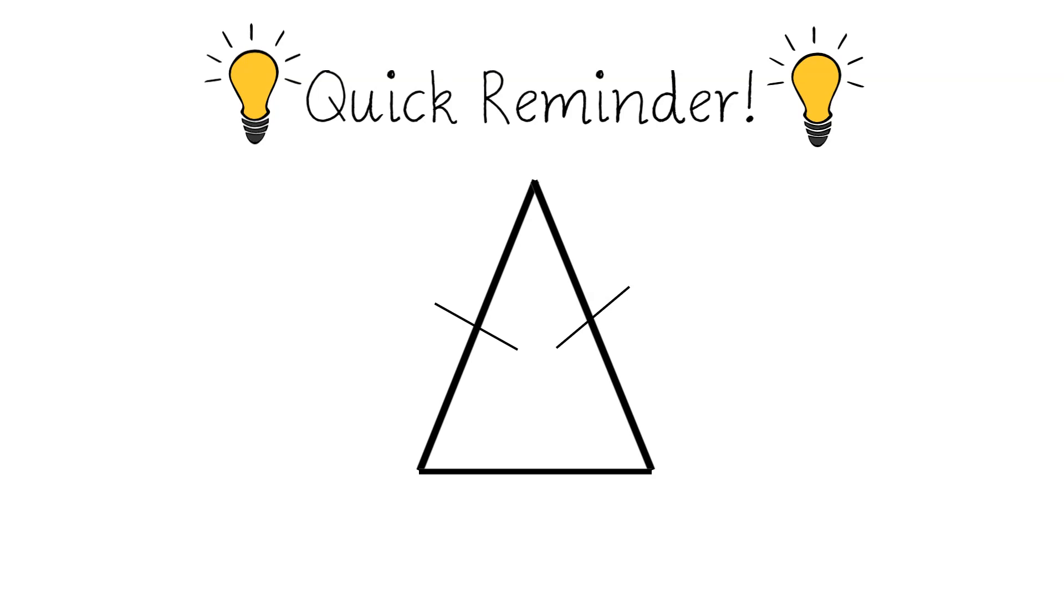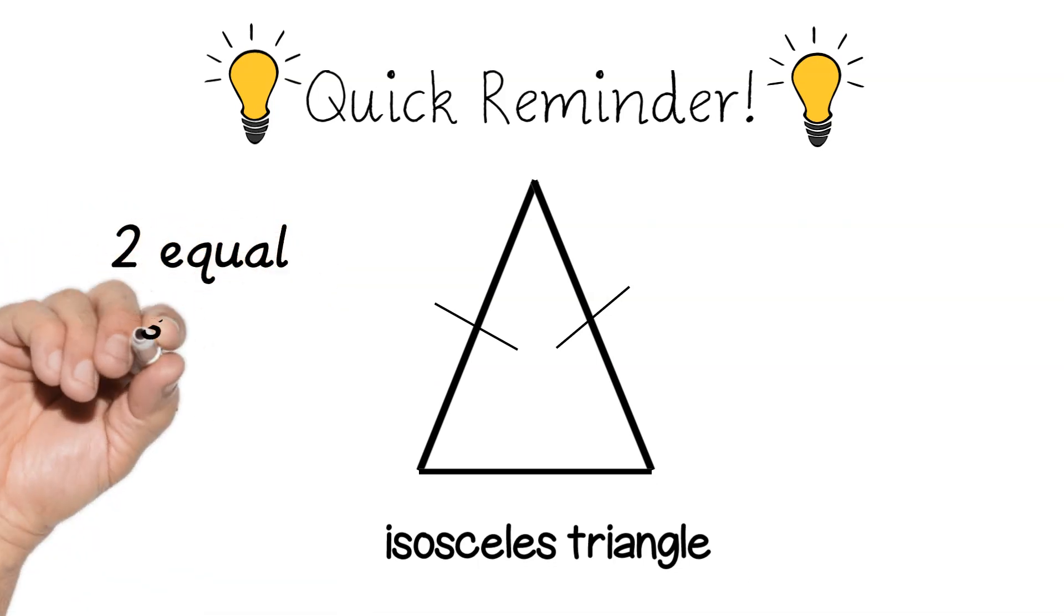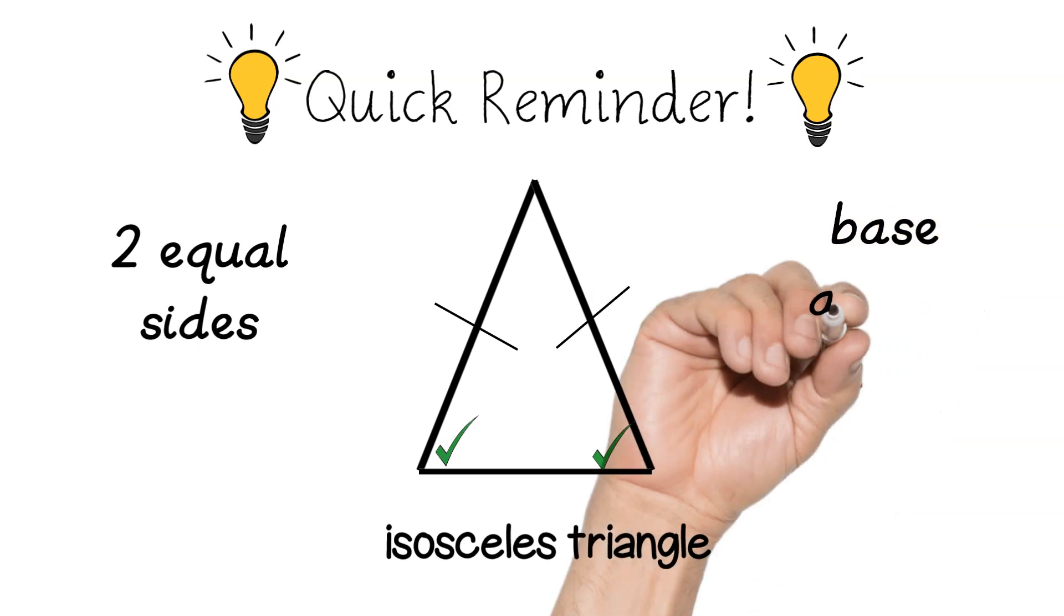There are two basic properties to an isosceles triangle. The first one, shown by the arcs, are that there are two equal sides and the second one is that it has two equal angles and they are below the arcs and it has to be the base angles. So you will be using these when dealing with circle theorems that include radii and chords.